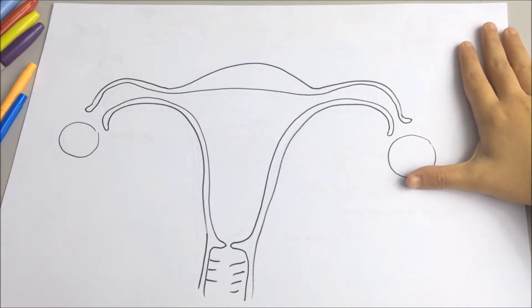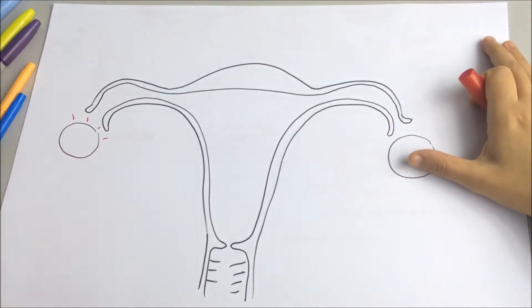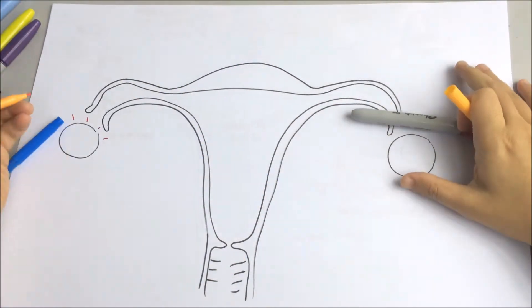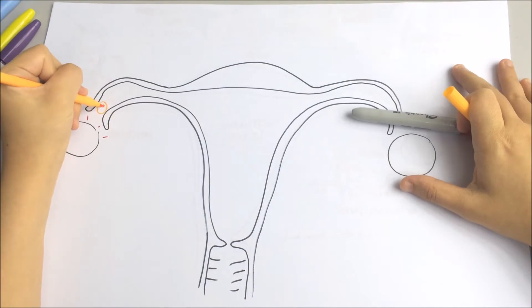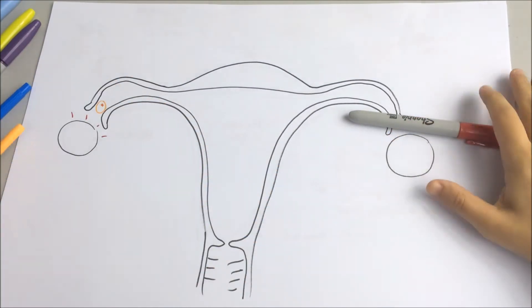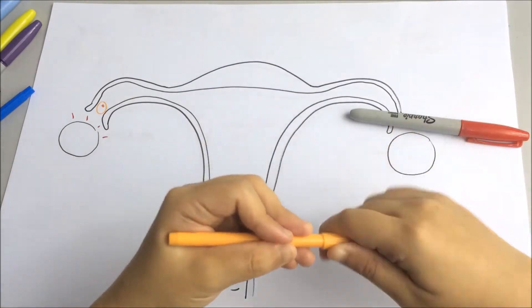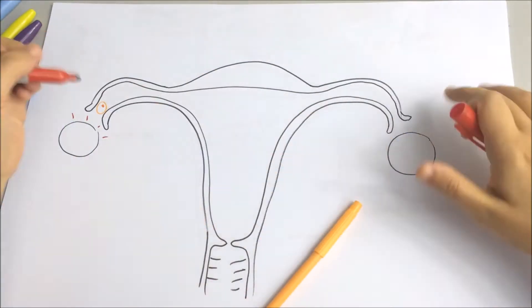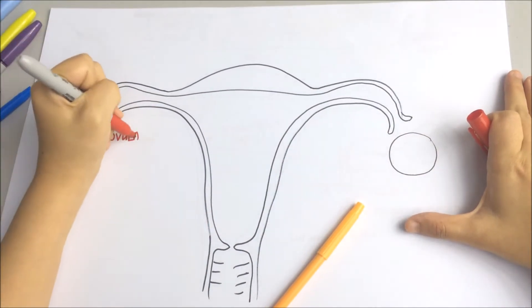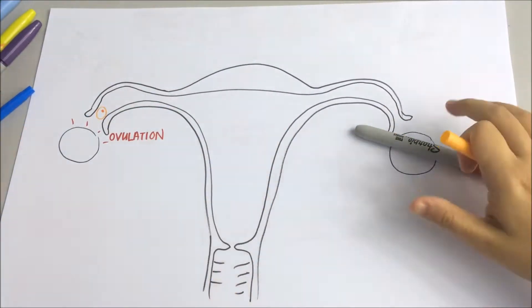And these are the ovaries. Every month in a female, the ovum will release an egg into the fallopian tube, and this process is known as ovulation.